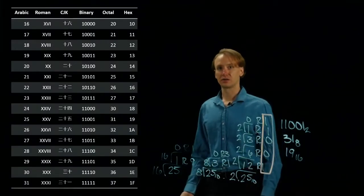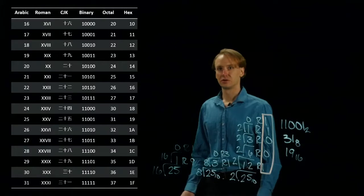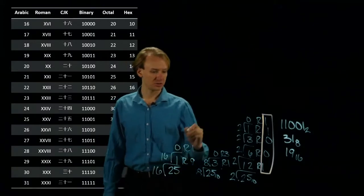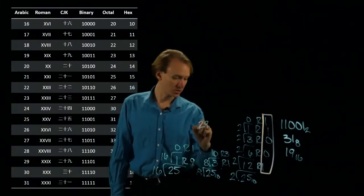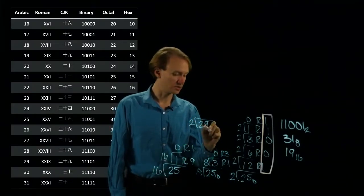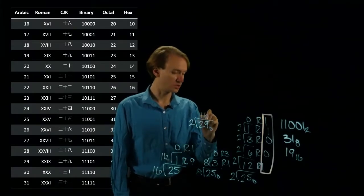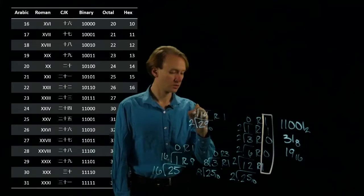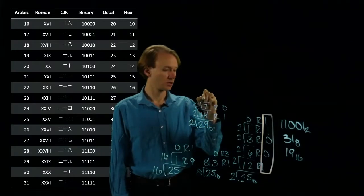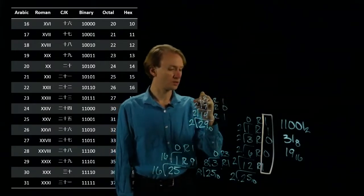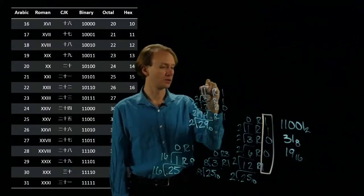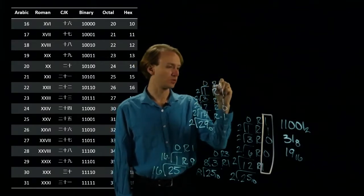If I try something larger like 29, I'm going to get some different results out. If I start with 29 and I try converting into binary, I'll do division by 2. And I will get 14 remainder 1, 7 remainder 0, 3 remainder 1, 1 remainder 1, and 0 remainder 1.